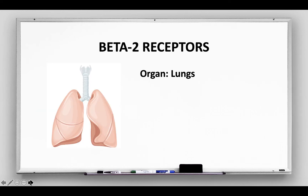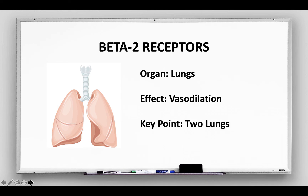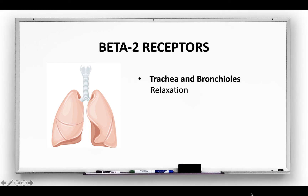Beta-2 receptors are found in the lungs, and when stimulated the effect is vasodilation. The easiest way to remember that beta-2 receptors are found in the lungs is that you have two lungs. When the beta-2 receptor is stimulated, the trachea and the bronchioles will relax and the arterioles will vasodilate.